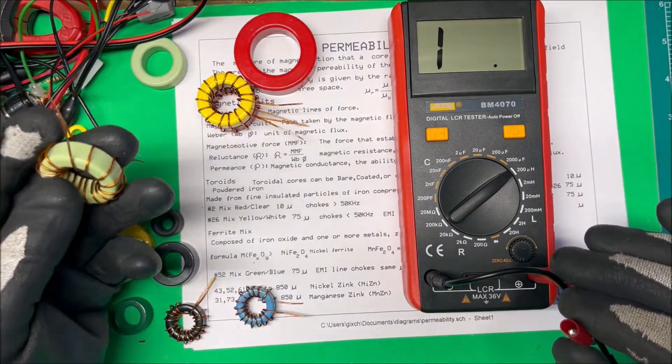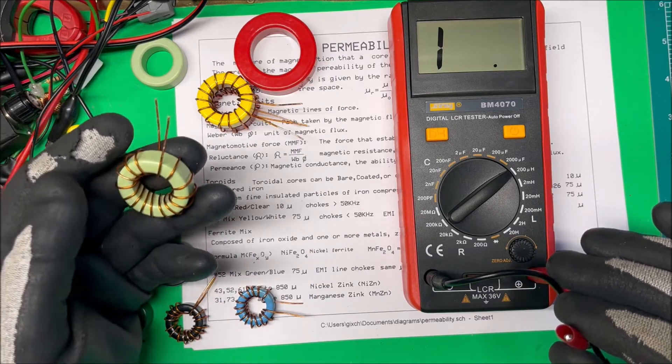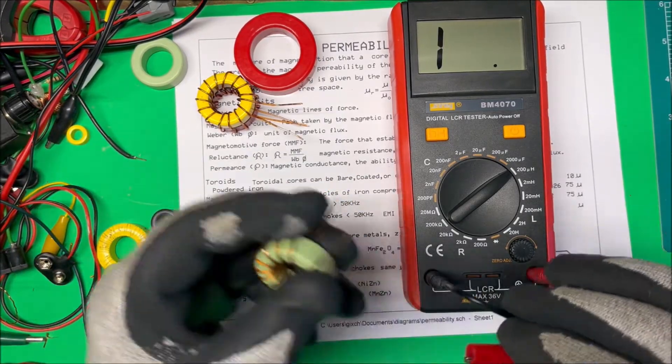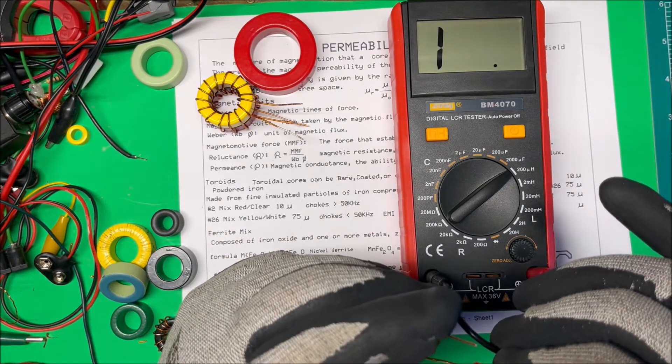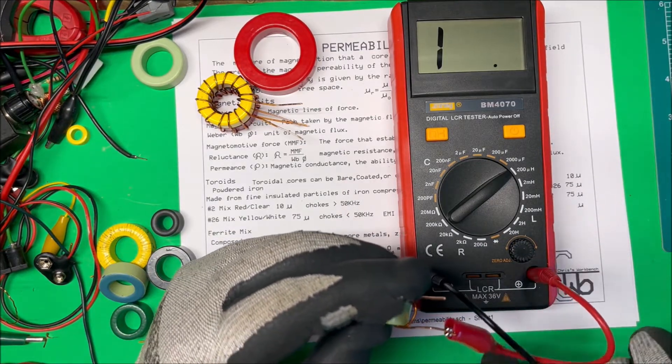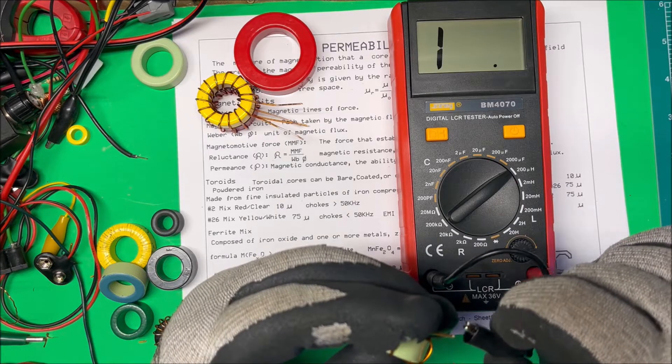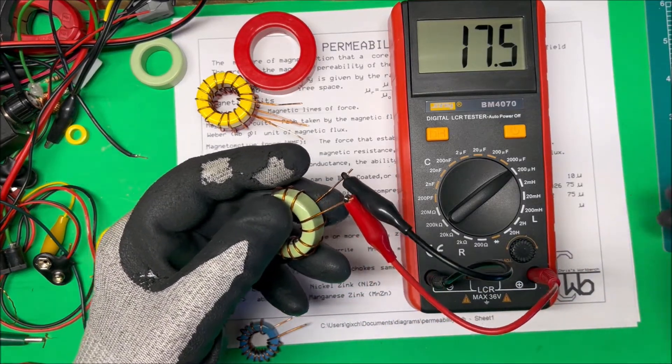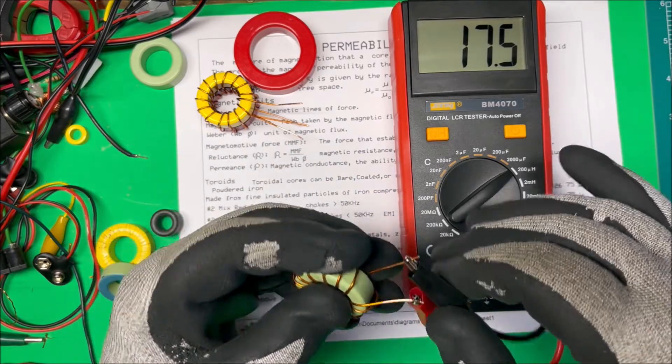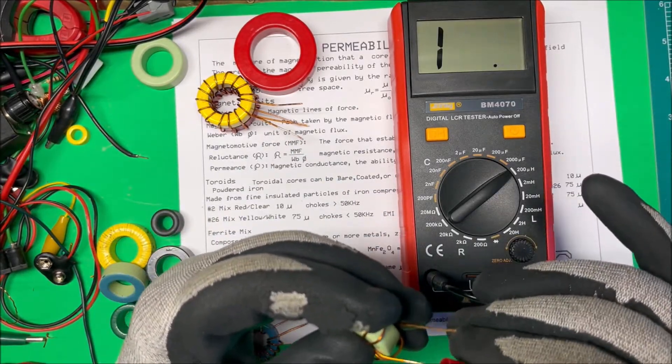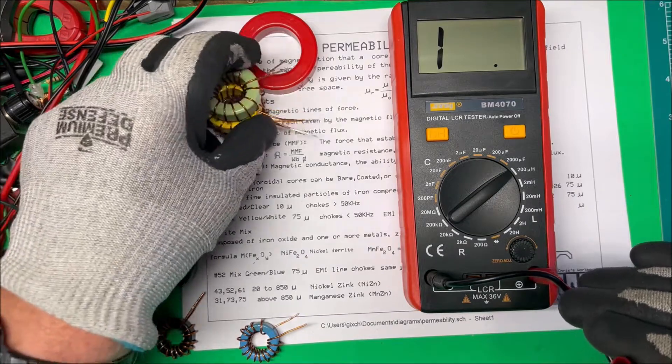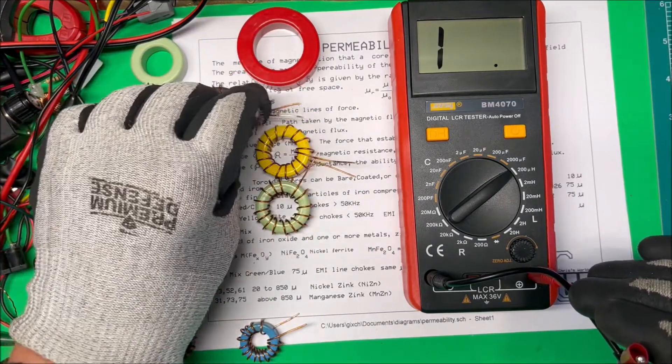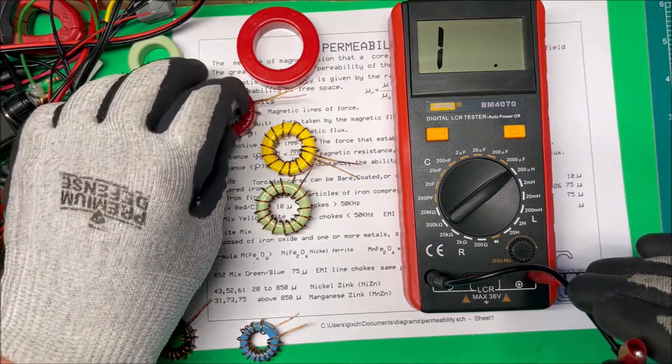And this one here is the ferrite core and it's nickel zinc, but it's got the same permeability as the yellow one does. So we'll see, it should be around the same. Yeah, 17.5, a little higher. So that worked out. These have the same permeability, so about the same, and this one permeability is down to 10.